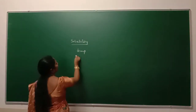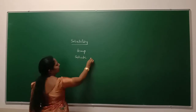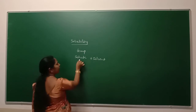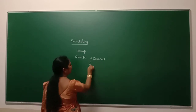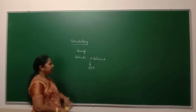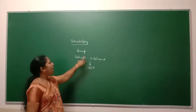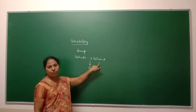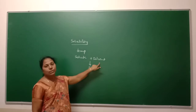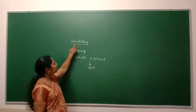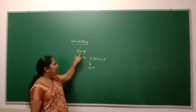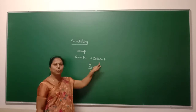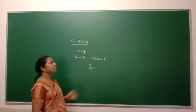Whatever the solute that we are going to add into the solvent undergoes dissolution in the solvent, it will form a solution. In this solution, at a given temperature, the maximum amount of solute has dissolved in the specified quantity of solvent. Such a term is called solubility. At a given temperature, the maximum amount of solute dissolved in the specified quantity of solvent is called solubility.